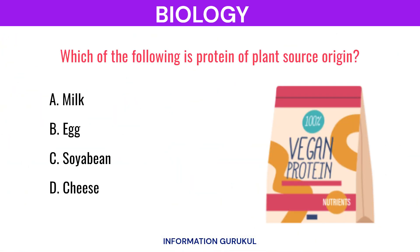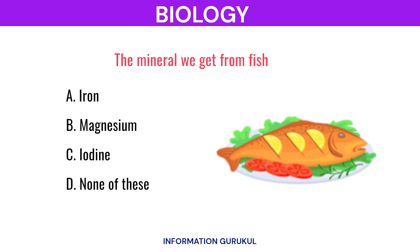Which of the following is a protein of plant source origin? Soya bean. The mineral we get from fish is Iodine.